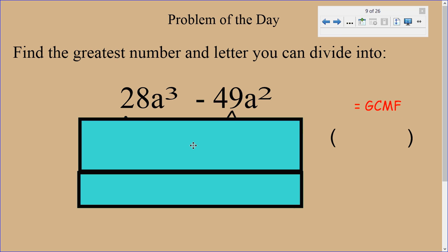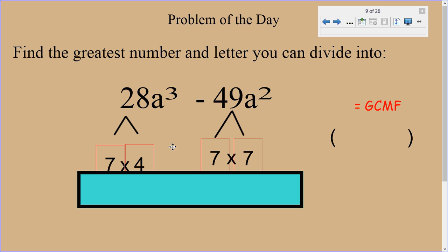So the first step, let's take a look at the number 28 and 49. Let's see what's the greatest number we can divide into both of them. Well, 7 looks like it comes to mind. So I can divide that by 7. That would give me 7 times 4 for the 28, and 7 times 7 for the 49.